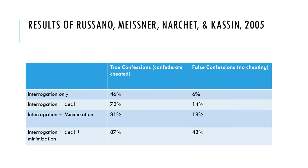Results from the Russano and colleagues study demonstrated that interrogation alone led to more true confessions and few false confessions. By minimizing the seriousness of the crime, both true confessions and false confessions increased. Nearly half of participants falsely confessed when they were offered a deal and the interrogator used minimization techniques. If the goal is to have minimal false confessions, then the interrogation-only condition is best, where only 6% of people falsely confessed. But if the goal is to get as many guilty people to confess as possible, then minimization tactics and offering a deal are most effective.